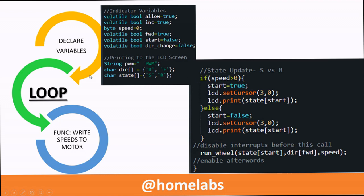Here's what's happening inside the loop variable. The loop variable basically operates by watching the values of these flags. As we just saw, the flags increase, forward and direction change are flipped in the interrupt functions.